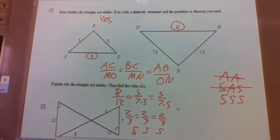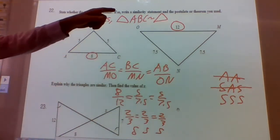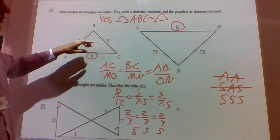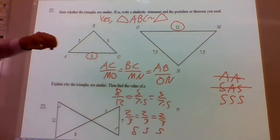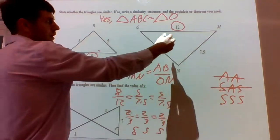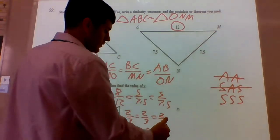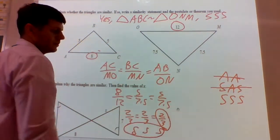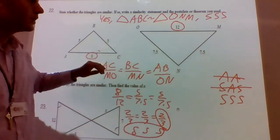The triangles are similar by side-side-side similarity. The similarity ratio is 2 to 3, or 3 to 2. For the similarity statement, triangle ABC — A corresponds with O, B corresponds with N, and C corresponds with M — so triangle ABC is similar to triangle ONM. If asked for the similarity ratio, it would be 2:3 or 3:2.